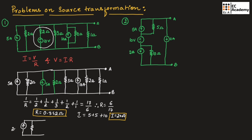The current source value is 20 amperes and the resistor value is 0.352 ohms. We can convert this current source into a voltage source by multiplying this resistor value with the current source, and this resistor should be connected in series. We can write a single voltage source with positive and negative polarity.